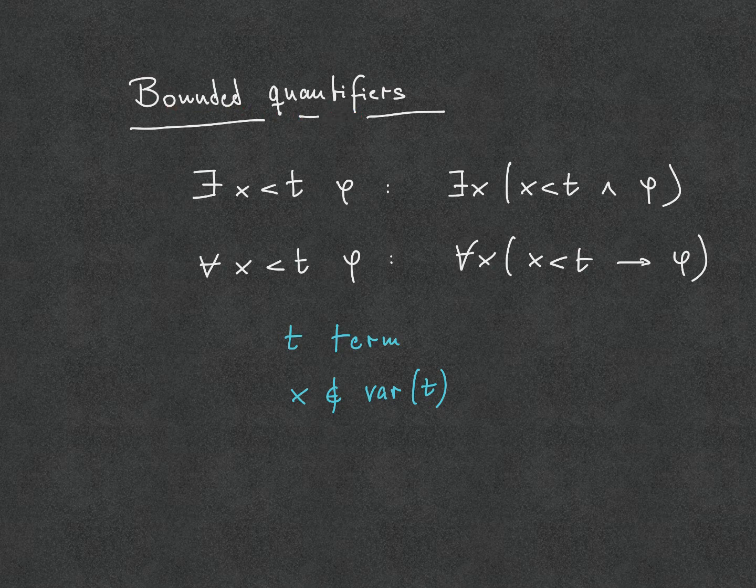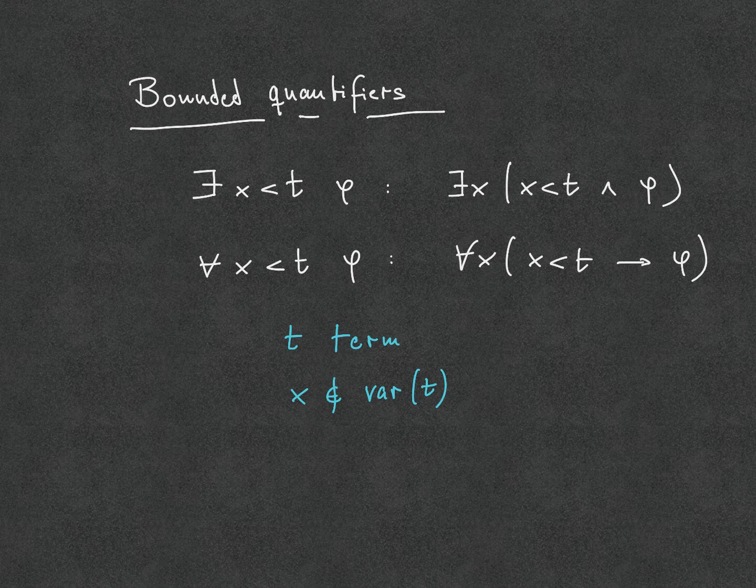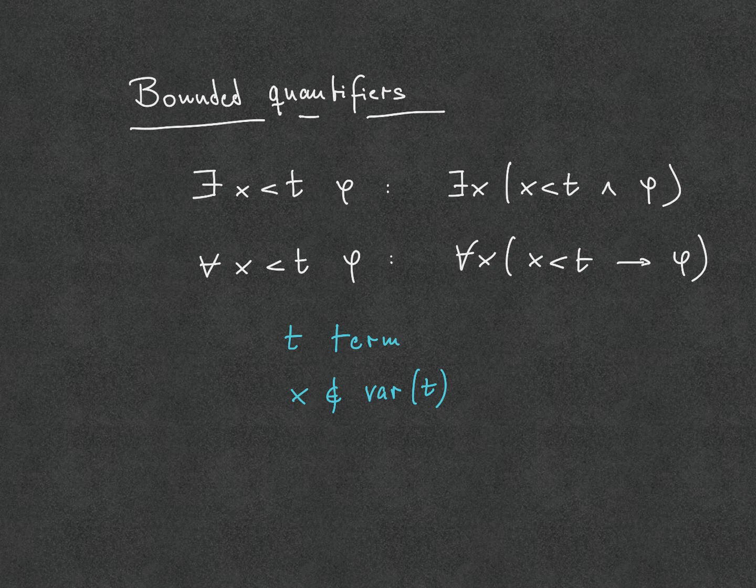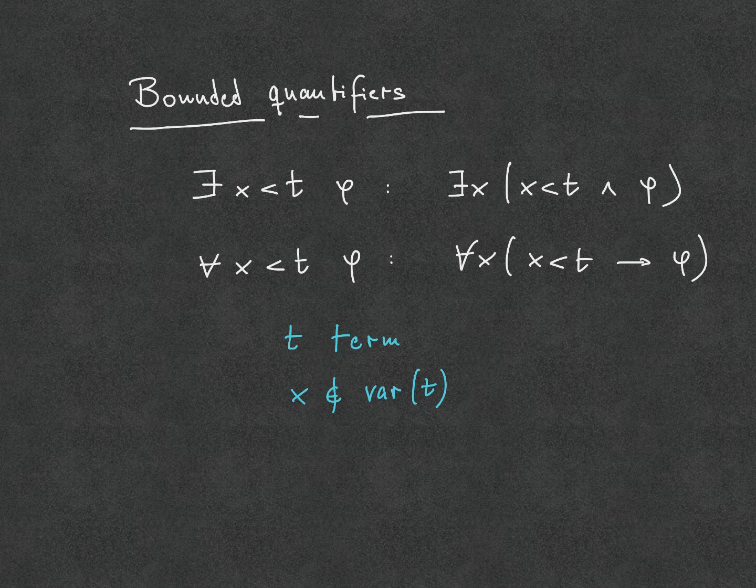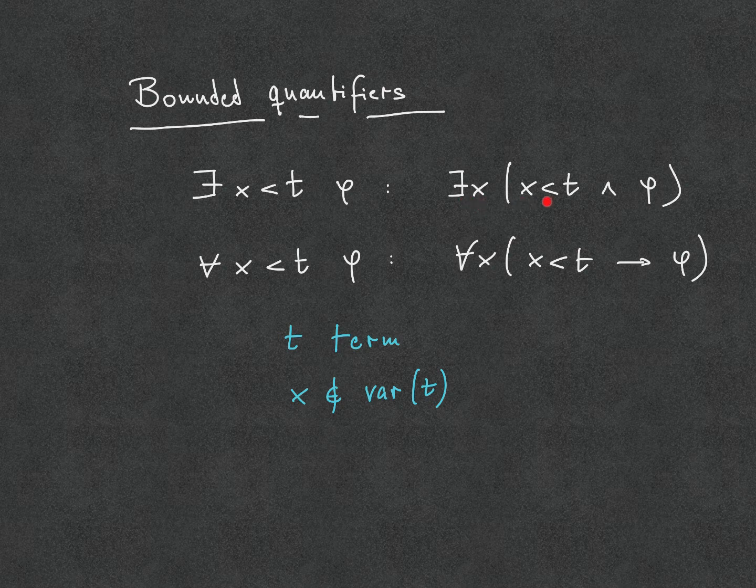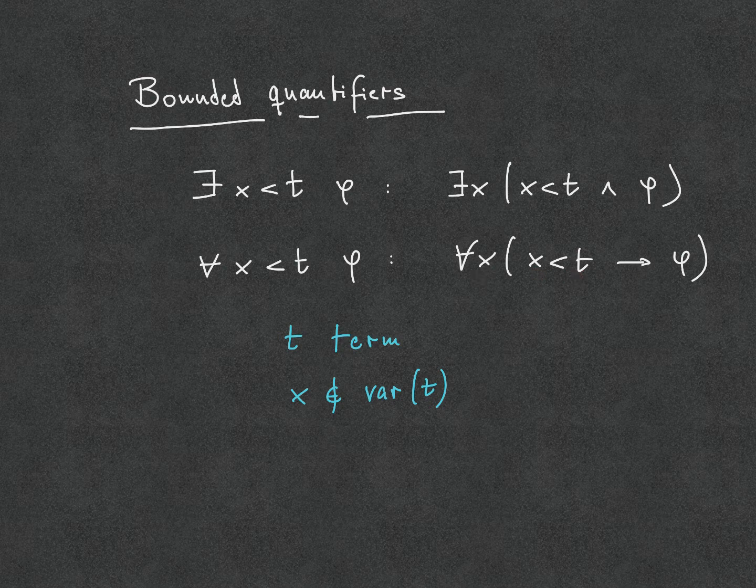We've already seen bounded quantifiers when we were talking about primitive recursion, where closure under bounded quantifiers was one of the important properties that helped us show that a lot of functions are actually primitive recursive. Let's revisit this and make this more precise. For all x less than t, phi is just shorthand for all x, if x is less than t, then phi.